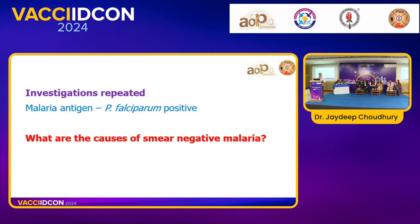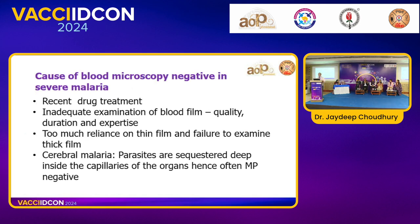There are several reasons for a smear-negative malaria result. The technical aspect is foremost — samples for thick smear should be processed within two hours. The thick smear concentrates parasites while the thin smear is a localized study used for species identification. If the thin smear is not examined properly, malaria can be missed. Technician skill is critical, and reading a thin smear requires careful expertise.